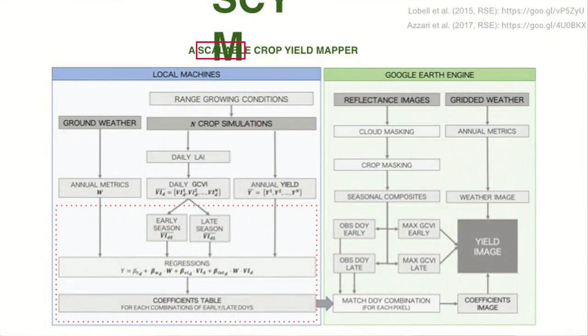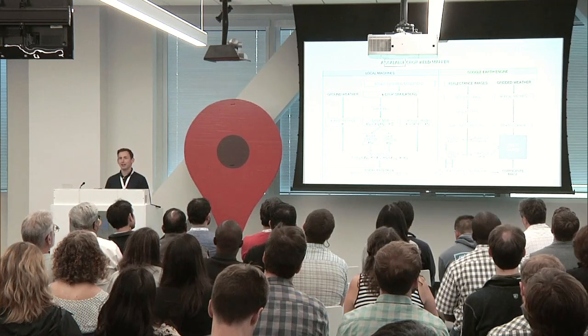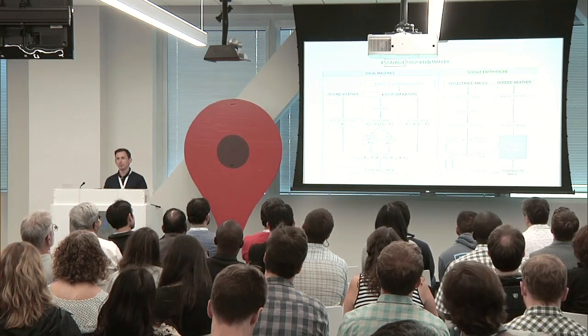To do so, David designed an algorithm named SCIM, that stands for Scalable Crop Yield Mapper, and it's represented in this diagram here. The take-home message I want to leave is that this algorithm doesn't rely at all on ground data, but exclusively on biophysical crop models and satellite data.